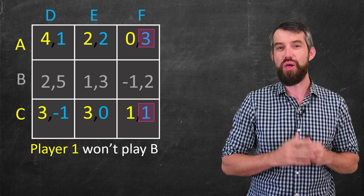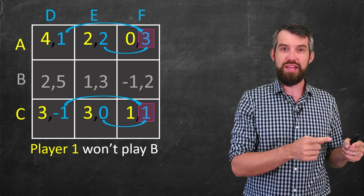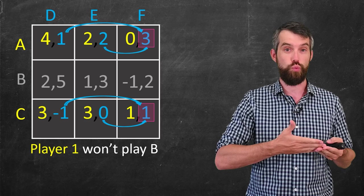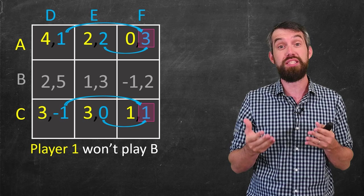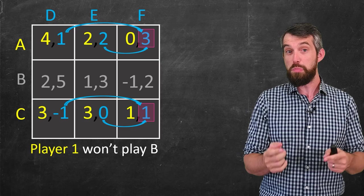And indeed, I want to focus on the choices that happen when they play F. If player one plays A, then the best outcome for player two is playing F. The one is better than the minus one and the zero.